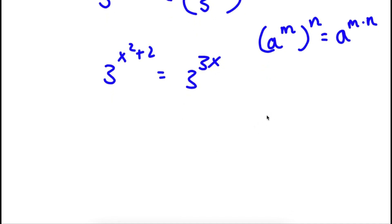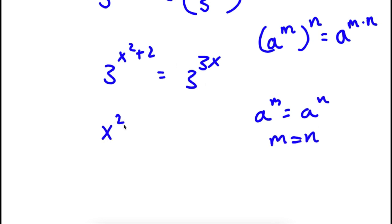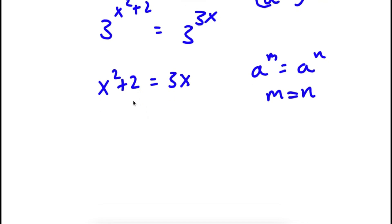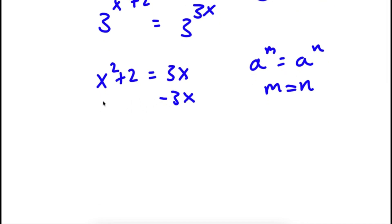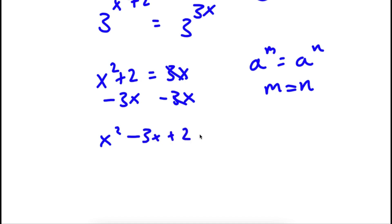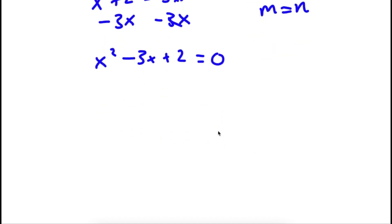Now, if I have something in the form a to the power of m is equal to a to the power of n, then this means that m is equal to n. So in this case, x squared plus 2 is equal to 3x. To solve this, I'm going to subtract 3x on both sides. So now I have x squared minus 3x plus 2 is equal to 0.